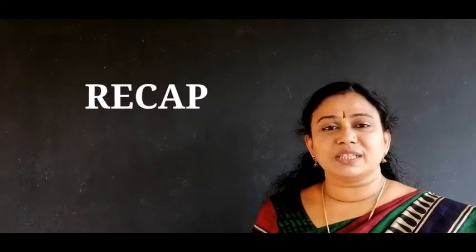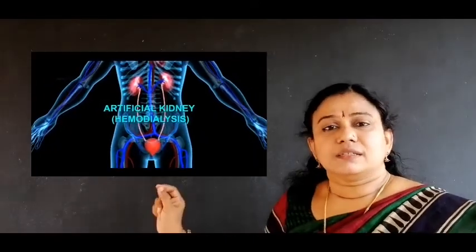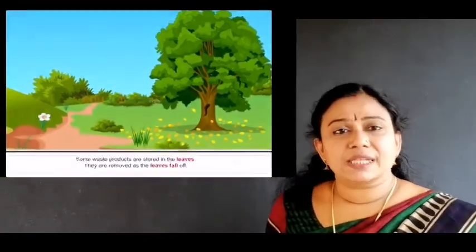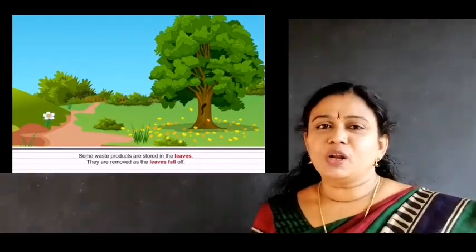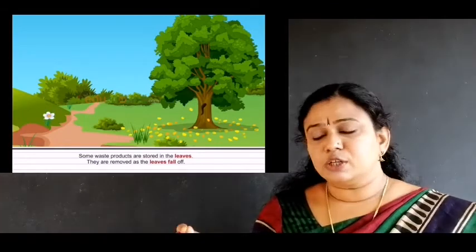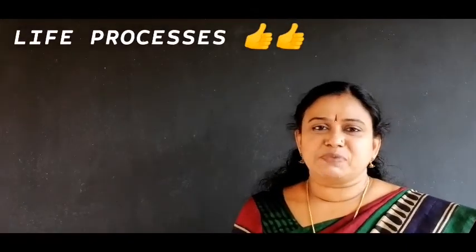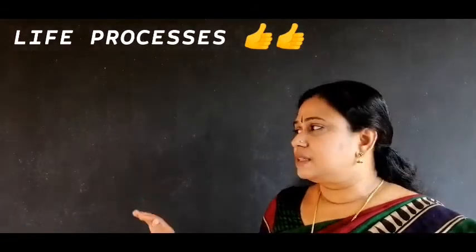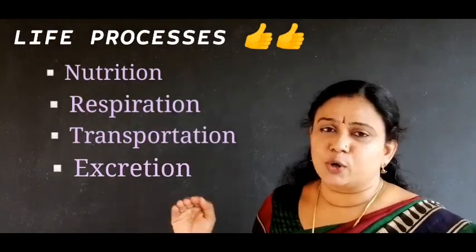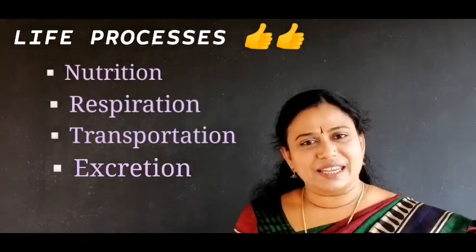Today we discussed the filtration unit of the kidney — the nephrons — their structure and function, hemodialysis (removal of waste from blood using an artificial kidney), and how plants excrete their waste products. This concludes the chapter on Life Processes, which covered nutrition, respiration, transportation, and excretion in humans and other organisms. Please read the textbook, prepare notes, and complete the assignment.